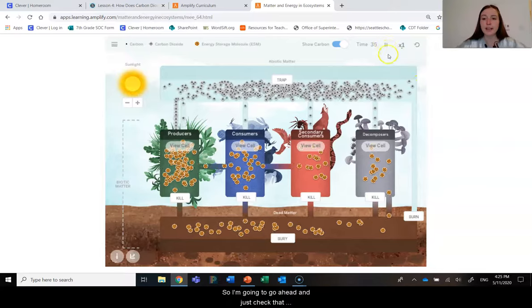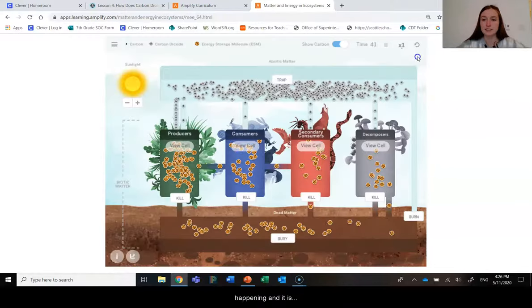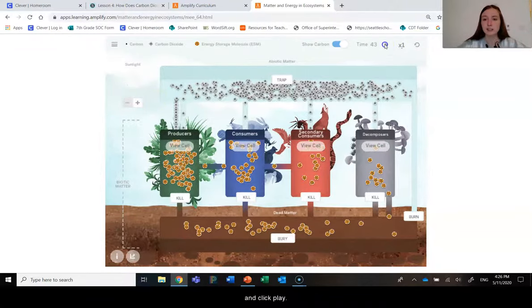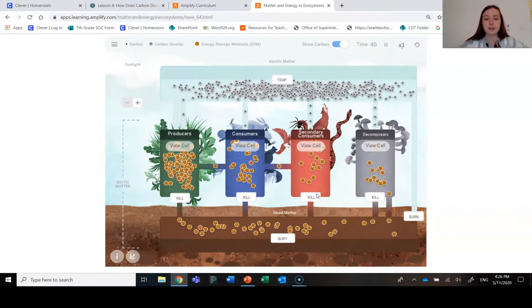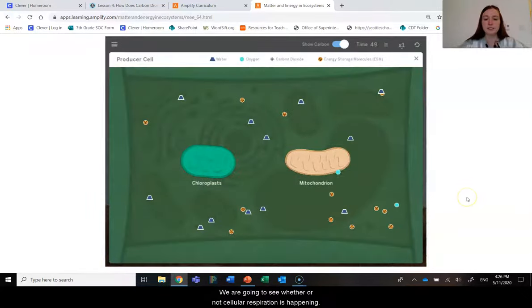So I'm going to go ahead and just check that the cellular respiration is happening, and it is. Then I'm going to pause and I'm going to turn off sunlight and click play. And we are going to see whether or not cellular respiration is happening.